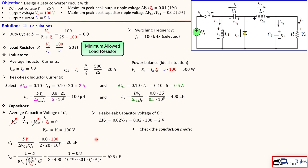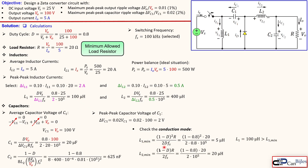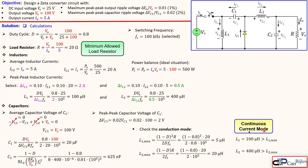We also need to check the conduction mode, because we assumed continuous current mode (CCM) in these calculations. There are minimum values required for L1 and L2. For L1, substituting the duty cycle, resistor, and other values gives a minimum of 5 microhenries — and we have 100 microhenries, so that's fine. For L2 using a different formula, the minimum is 20 microhenries — and we have 400 microhenries. So the assumption of continuous current mode is valid.